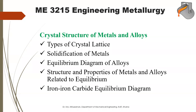The second part of the course is the crystal structure of metals and alloys. Here we are going to study the types of crystal lattice. You may already know from higher secondary physics how atoms are organized inside a material. Specifically, we will study unit cells such as simple cubic, body-centered cubic, and face-centered cubic — the most commonly used crystal lattice structures for metals and alloys.